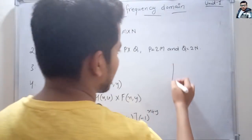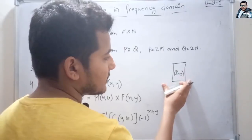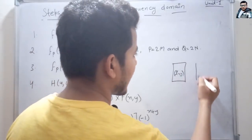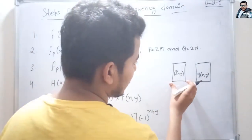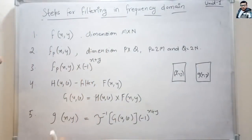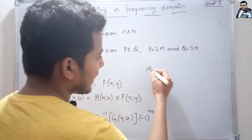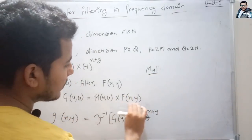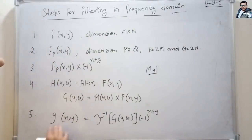After going through all these steps, we have the processed image. We take image f(x, y), apply a filter to smooth or sharpen it, and obtain g(x, y). In the frequency domain, we always multiply the filter with the Fourier transform of the image and then apply the inverse Fourier transform to get back the image.